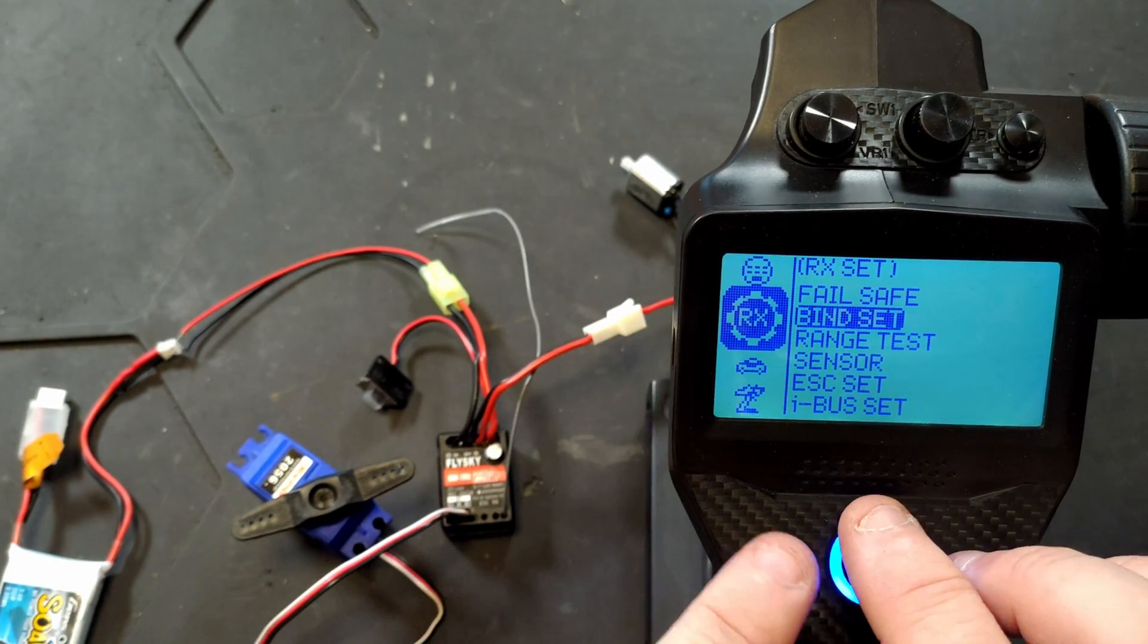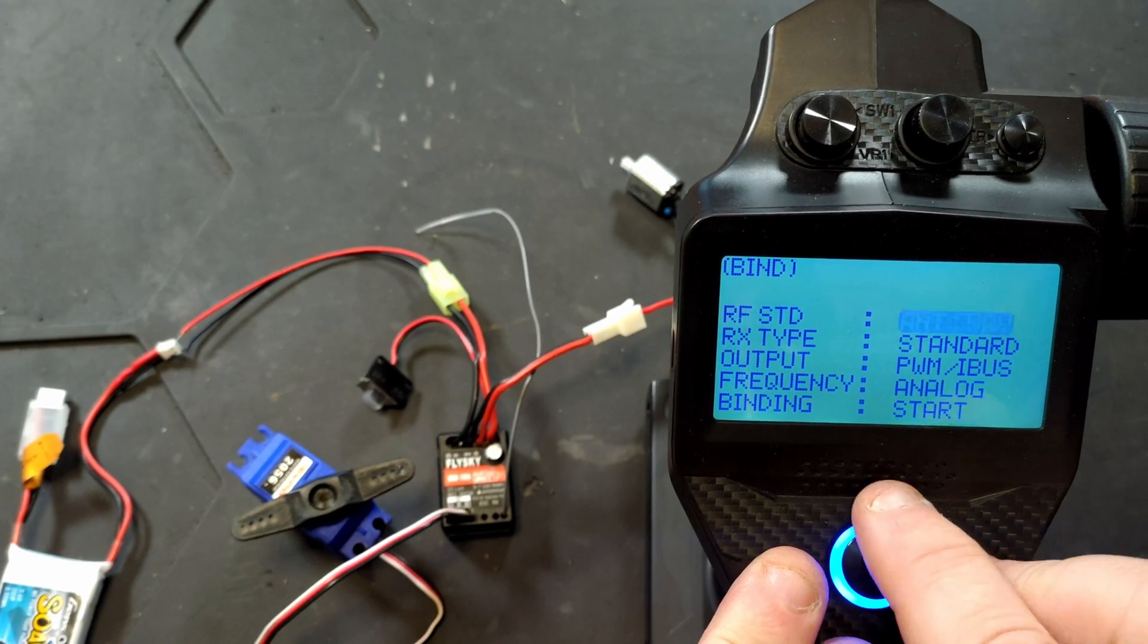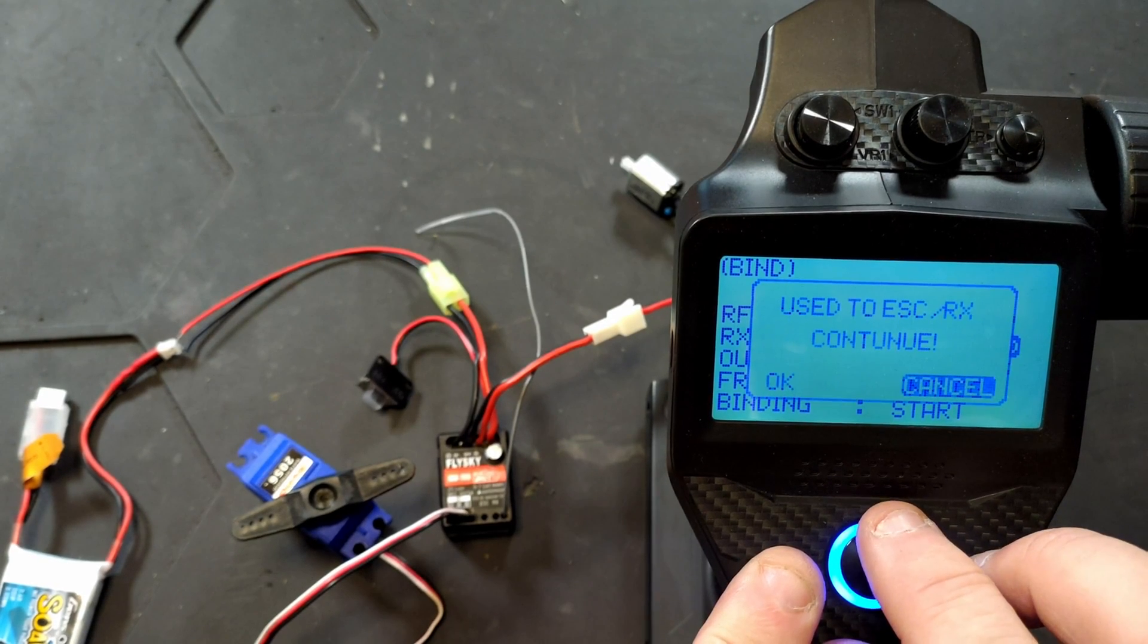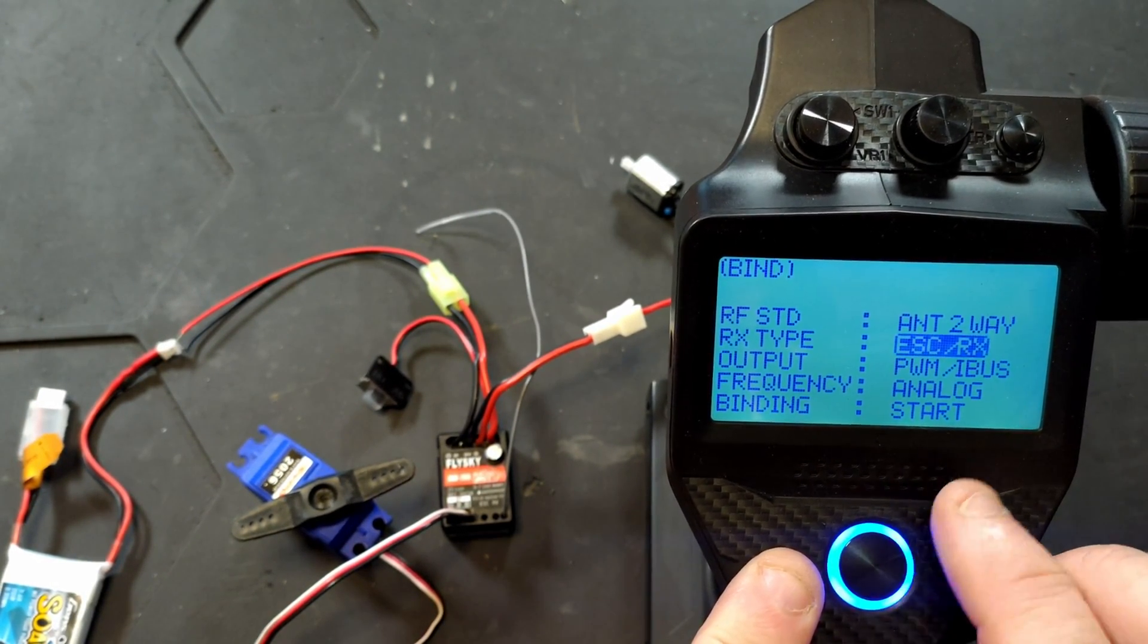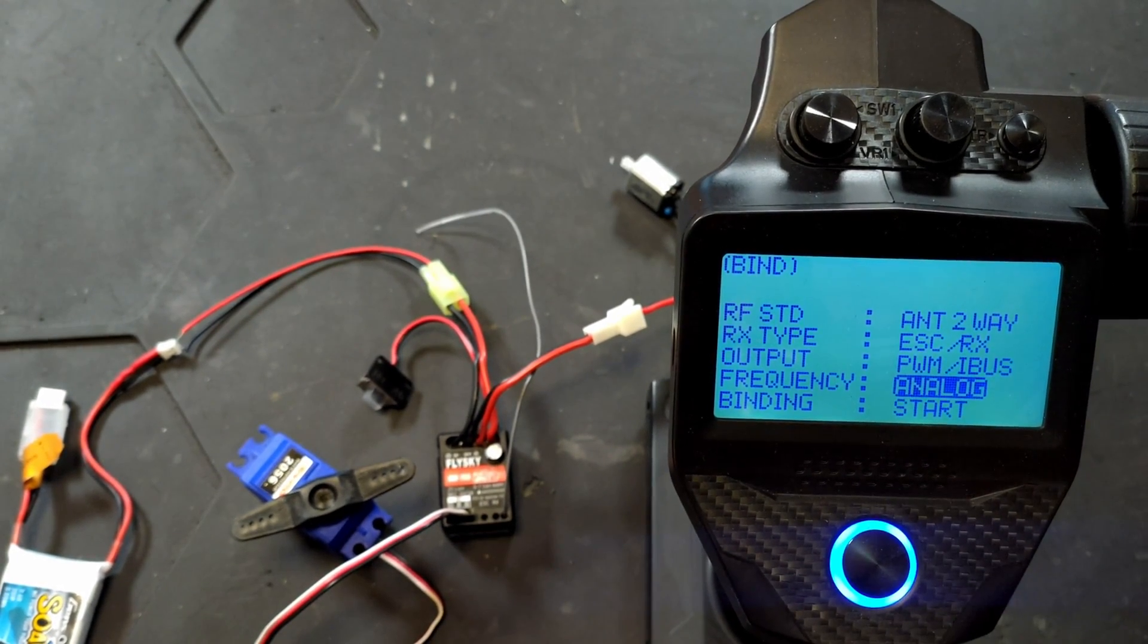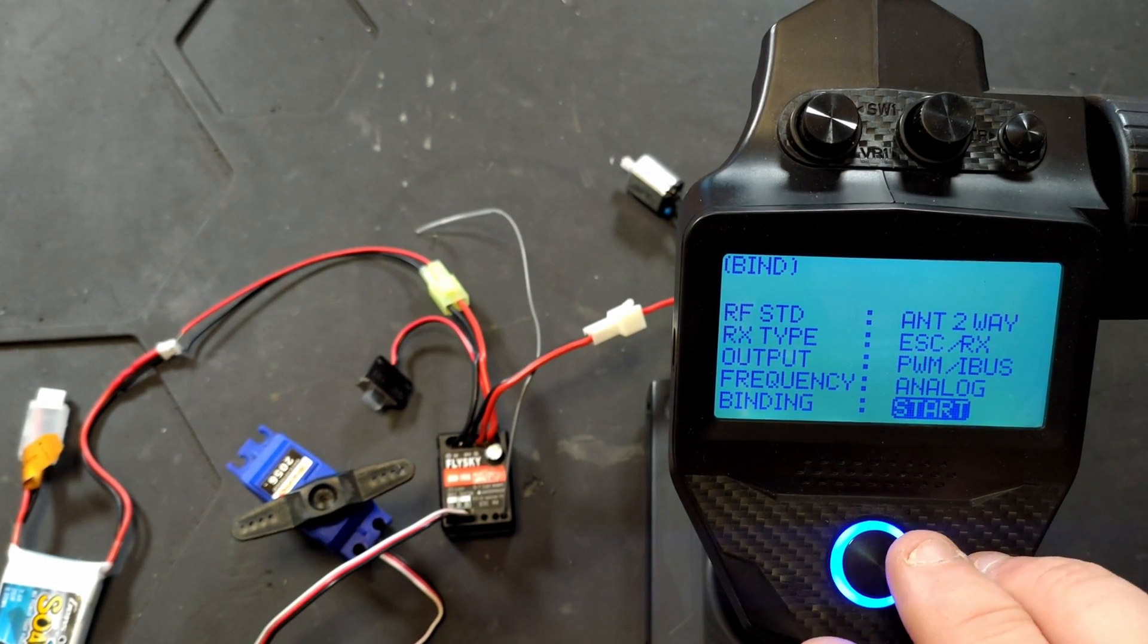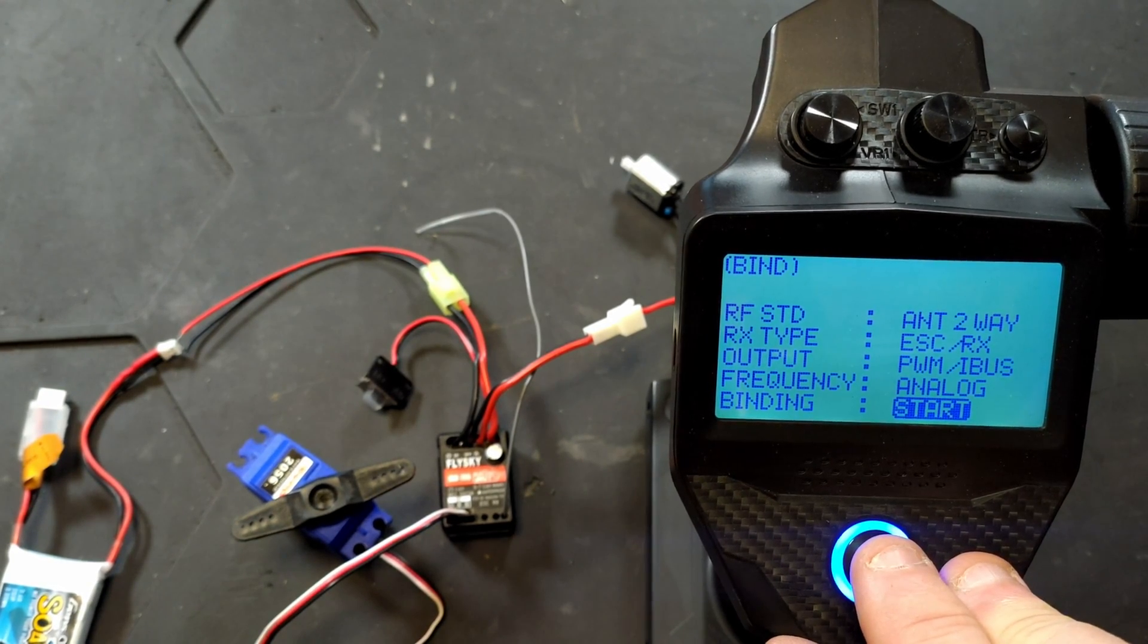What we're going to want to do now is go to our RX menu, then we're going to have to change this to two-way, then RX type, going to change that to ESC and receiver. I'm going to leave this one set on analog because we know it will work that way with whatever servo we plug into it, and speed and everything's not that important on this sort of setup.